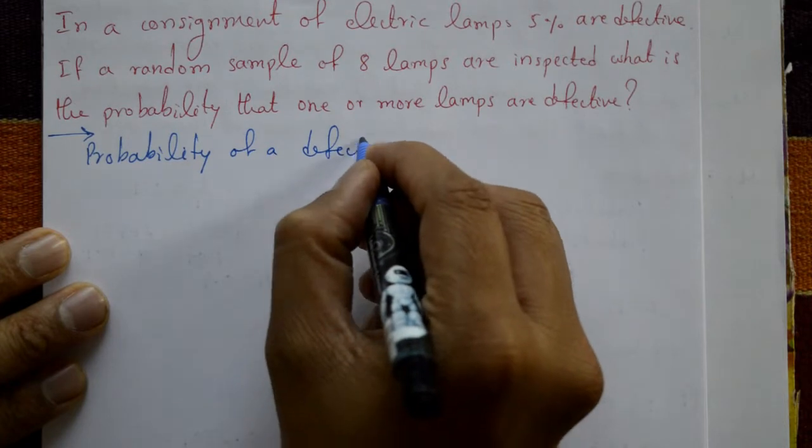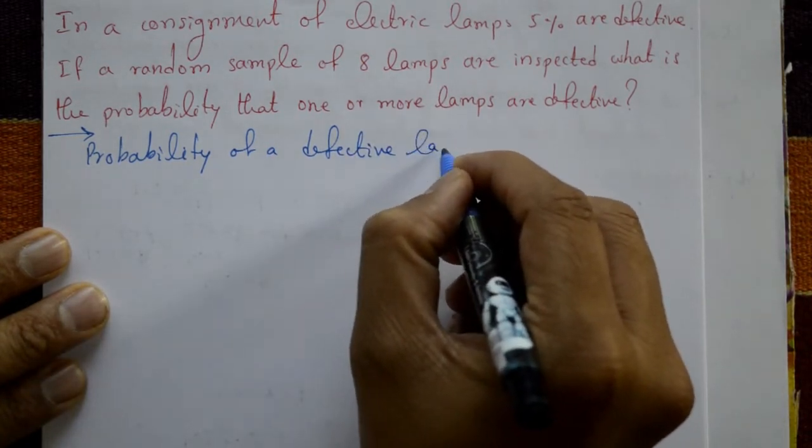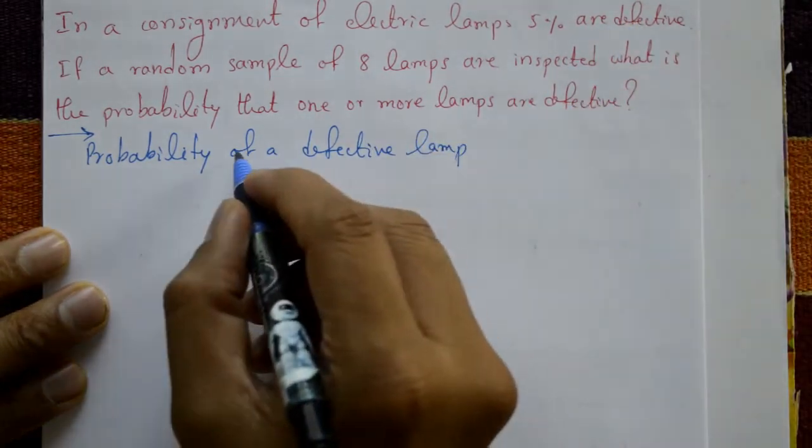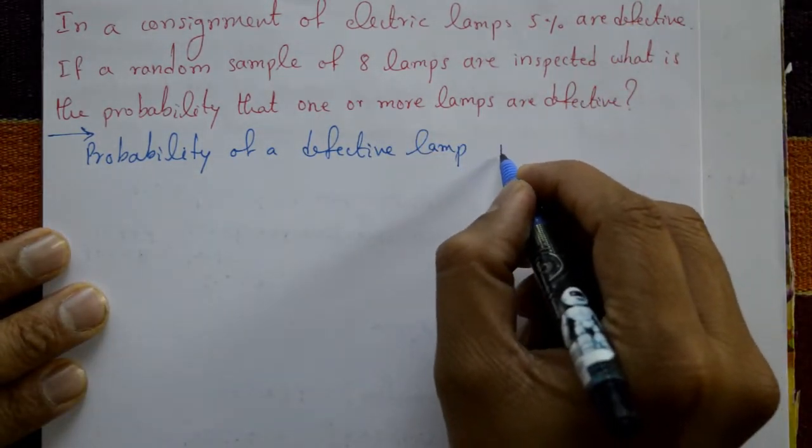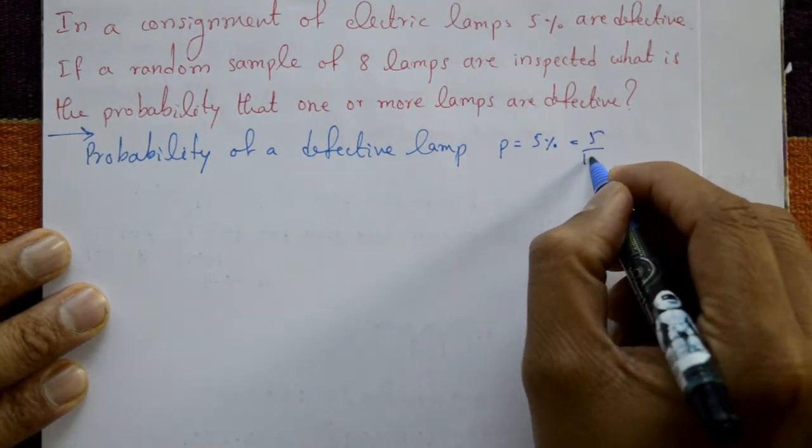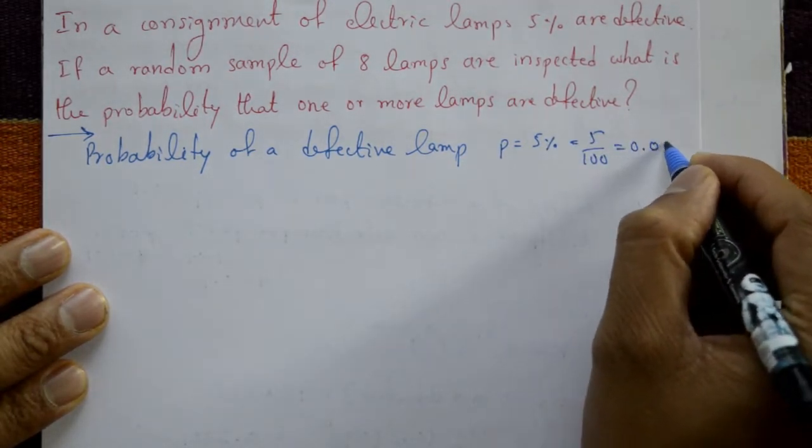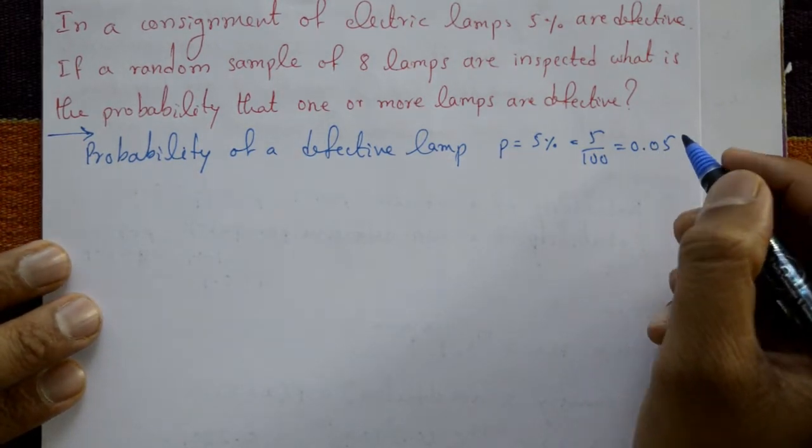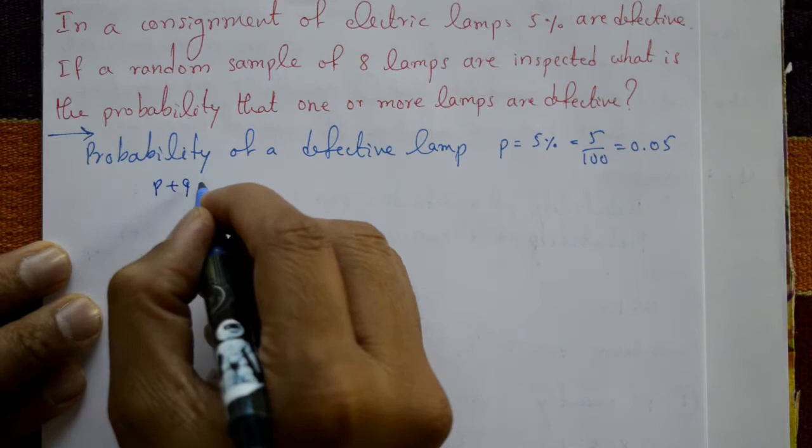In this question, 5% are defective. Probability of defective lamp is p equal to 5%, means 5 by 100, which is 0.05. P is equal to 0.05.